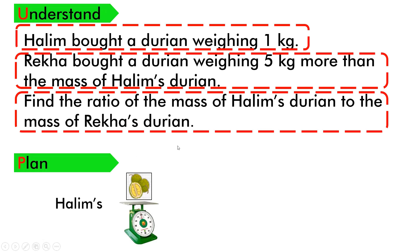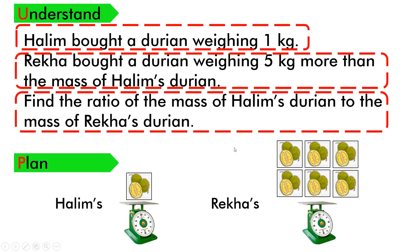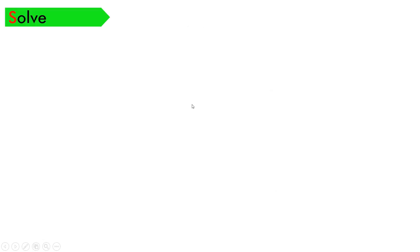Number 2, we have to plan — kita kena rancang. Here we can draw a diagram. Halim's durian is 1 kilogram. Rekha bought a durian 5 kilogram more than Halim's. So one box represents 1 kilogram. Rekha's durian is 5 kilogram more, so: 1, 2, 3, 4, 5, 6 — that gives us 6 boxes total.